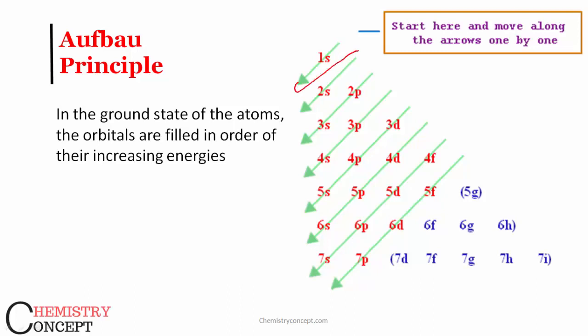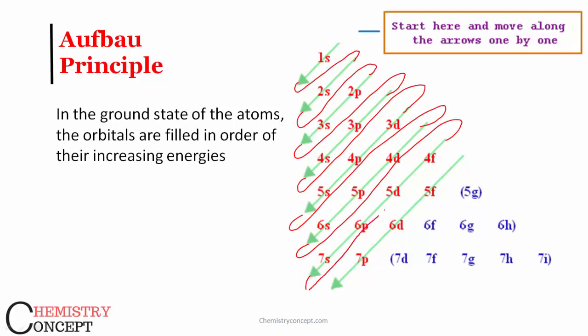And then start filling orbitals in this order: 1s, then go to 2s, then go to 2p, 3s, then go to 3p, 4s, then 3d, 4p, 5s, then 4d, 5p, 6s, then 4f, 5d, 6p, 7s, and so on. This is the way you can simply remember this.